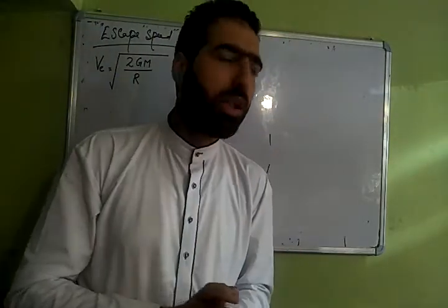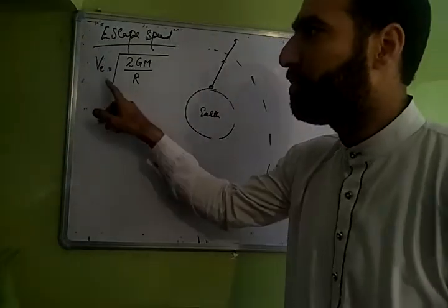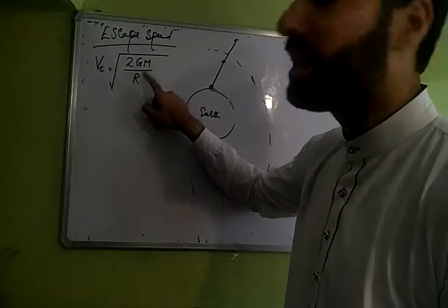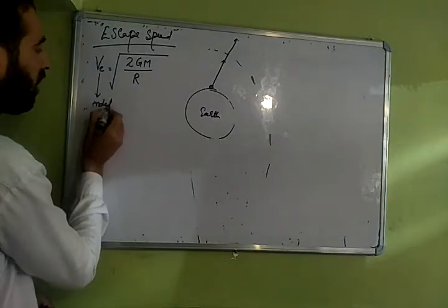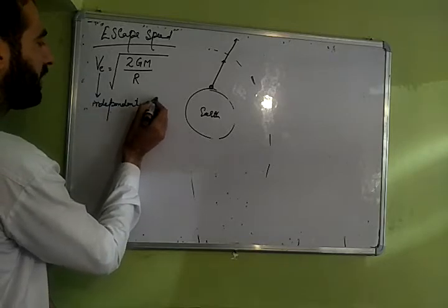That you want to see the planet. If you want to see the escape speed, then the escape speed near the Jupiter surface will depend upon the mass of Jupiter, radius of Jupiter, but this escape speed is independent of mass of object.